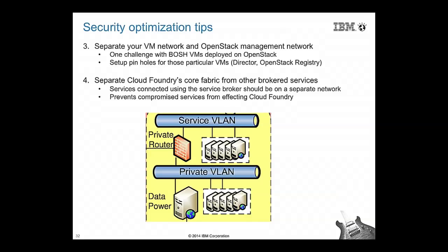One good example of a necessary pinhole is Bosh: in order for Bosh to communicate with OpenStack and deploy Cloud Foundry VMs, you need pinholes opened just for that. Finally, you should also keep the services you'll use in Cloud Foundry on a separate network — your OpenStack management network, your Cloud Foundry core components on a second network, and a third network for services like DB2, with access pinholes only where needed.